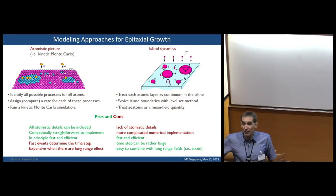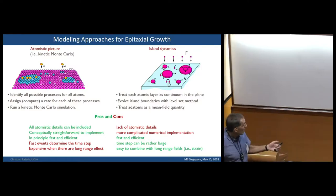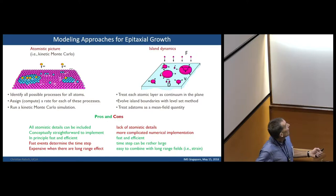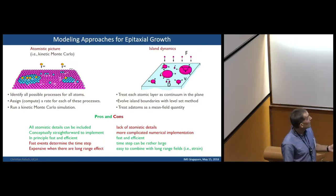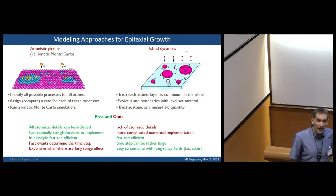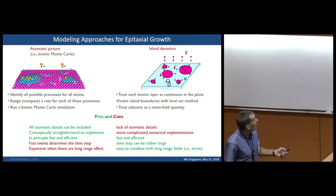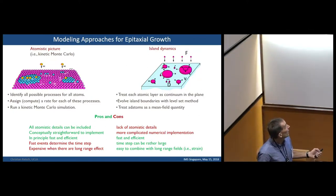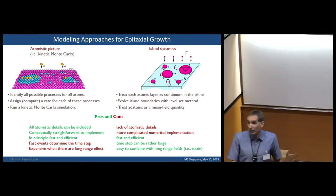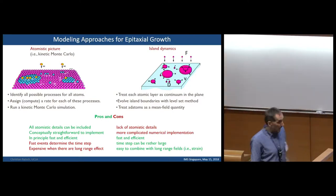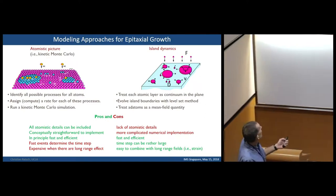In the island dynamics model using level sets — the second part of my talk — we take a different philosophy. We do not resolve every individual atom. Instead, we treat each atomic layer as a continuum in the plane. We have islands, and all that really matters is where are the island boundaries and how do those boundaries evolve — they evolve with a certain velocity v. The atoms are treated as a mean field quantity by solving a diffusion equation. I've given a short list of pros and cons of these approaches, which is very subjective.